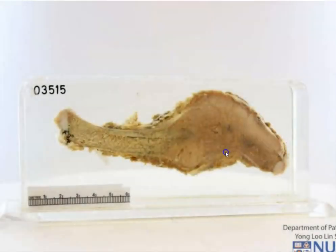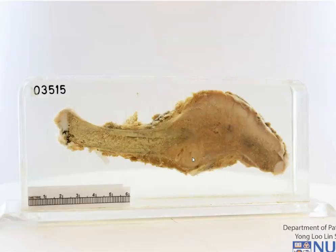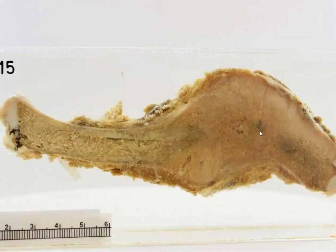When we look at the bone, it is very clear that there is a mass located within the diaphysis of the bone. This mass is pale and tan in color, however it is quite fleshy. There are some areas that are a little bit paler, which probably represent necrosis.